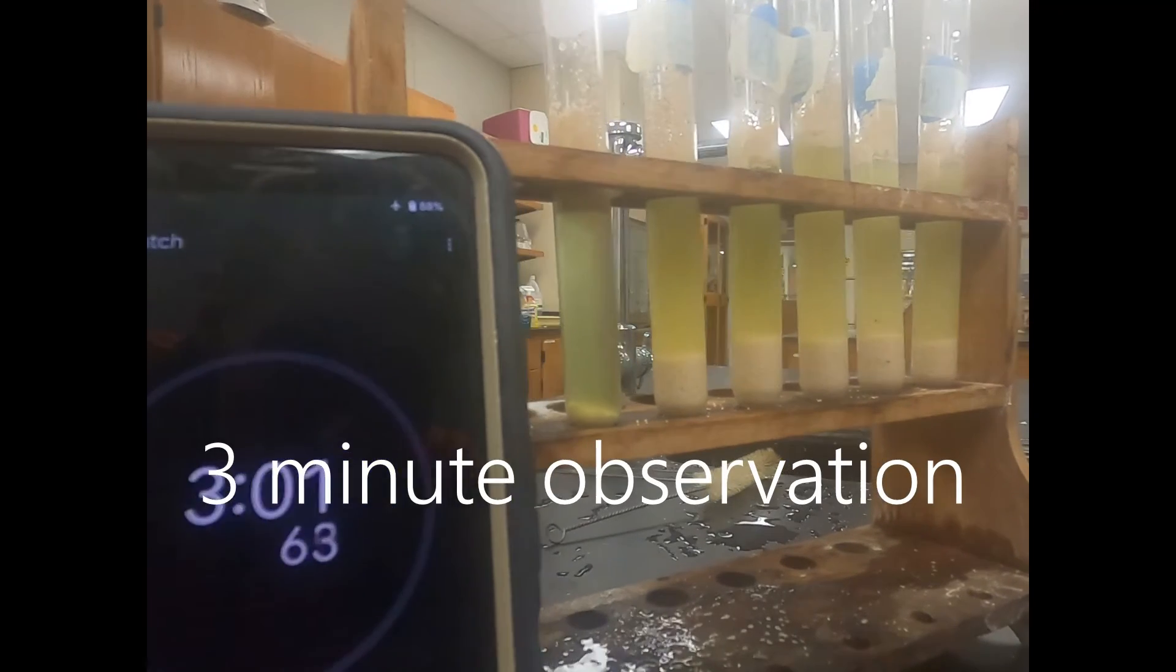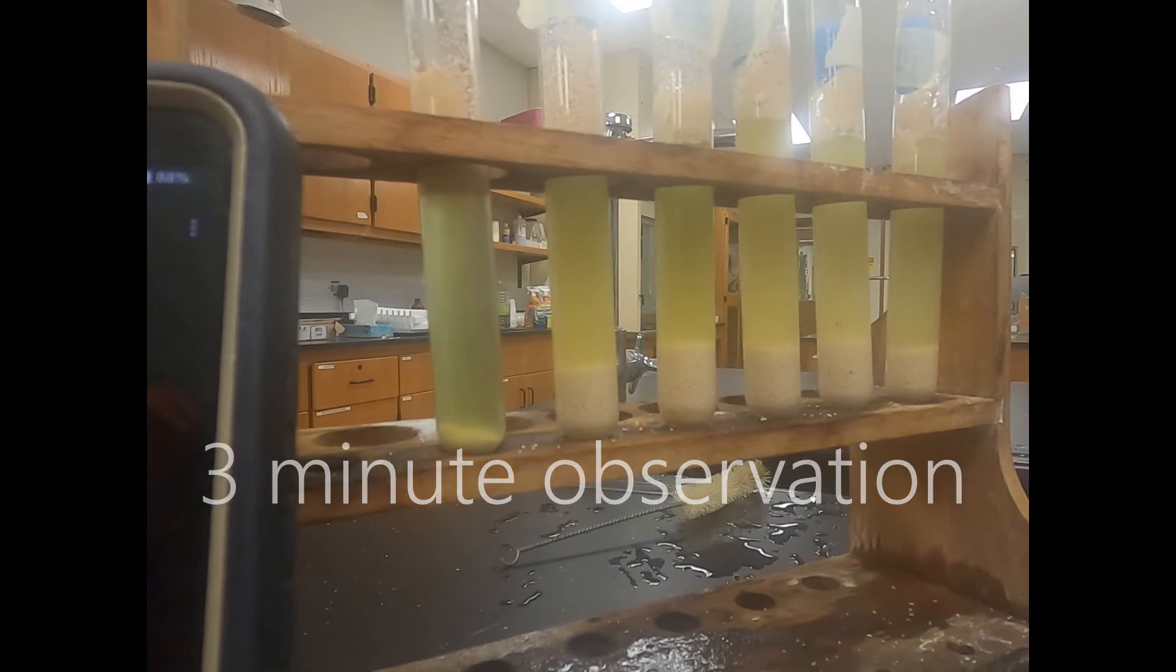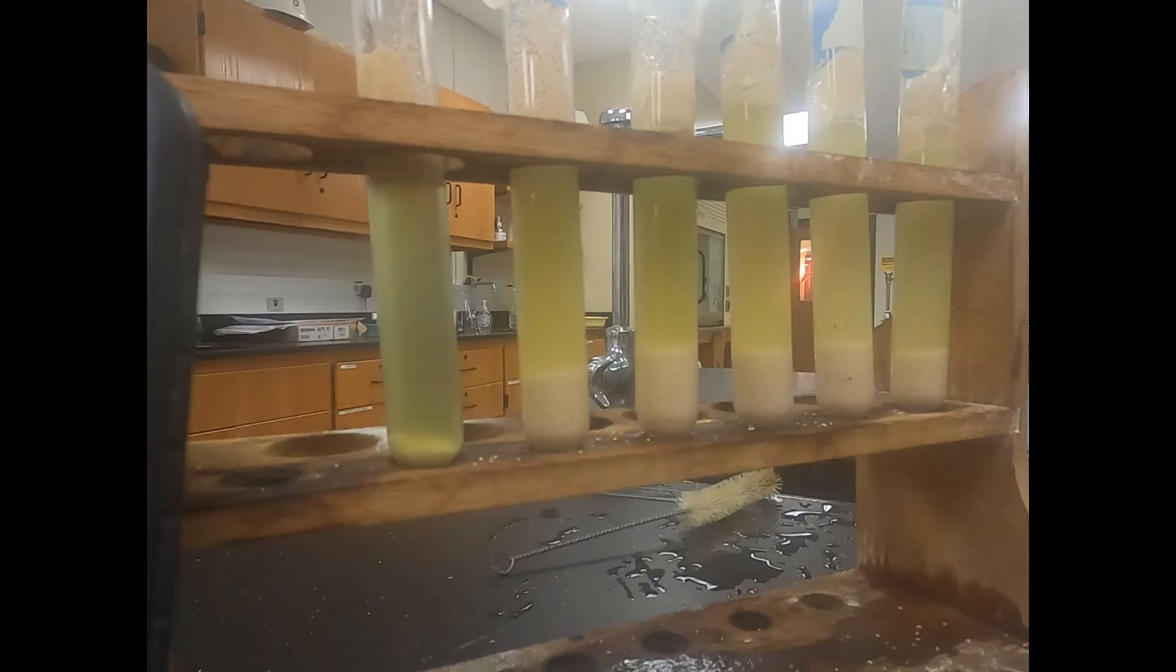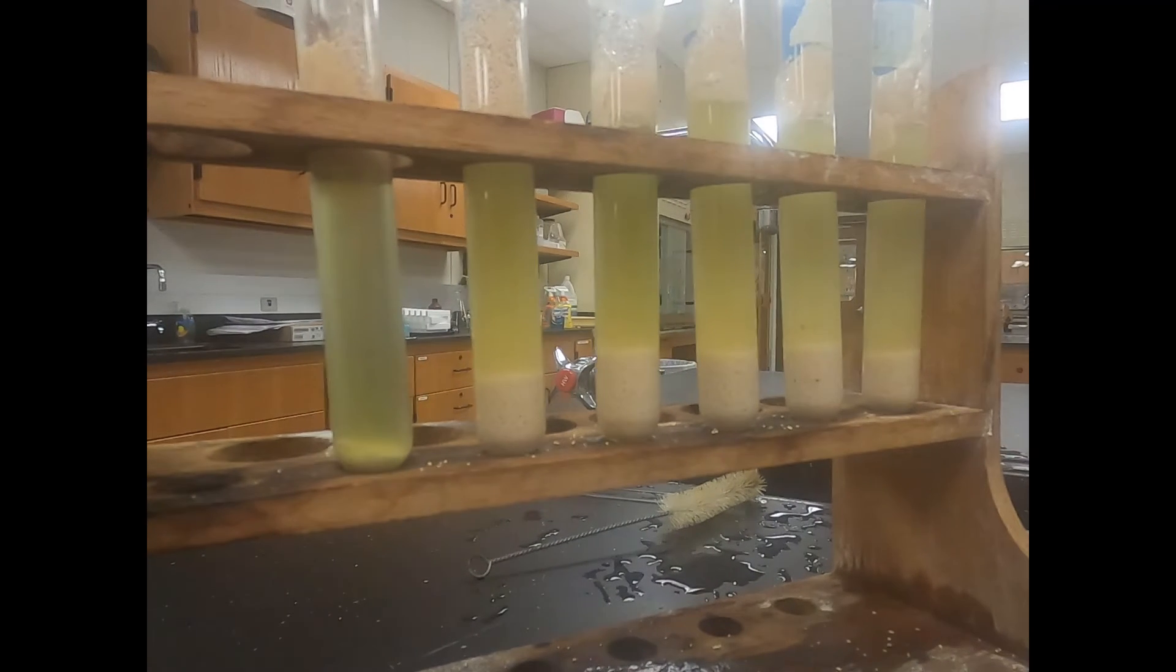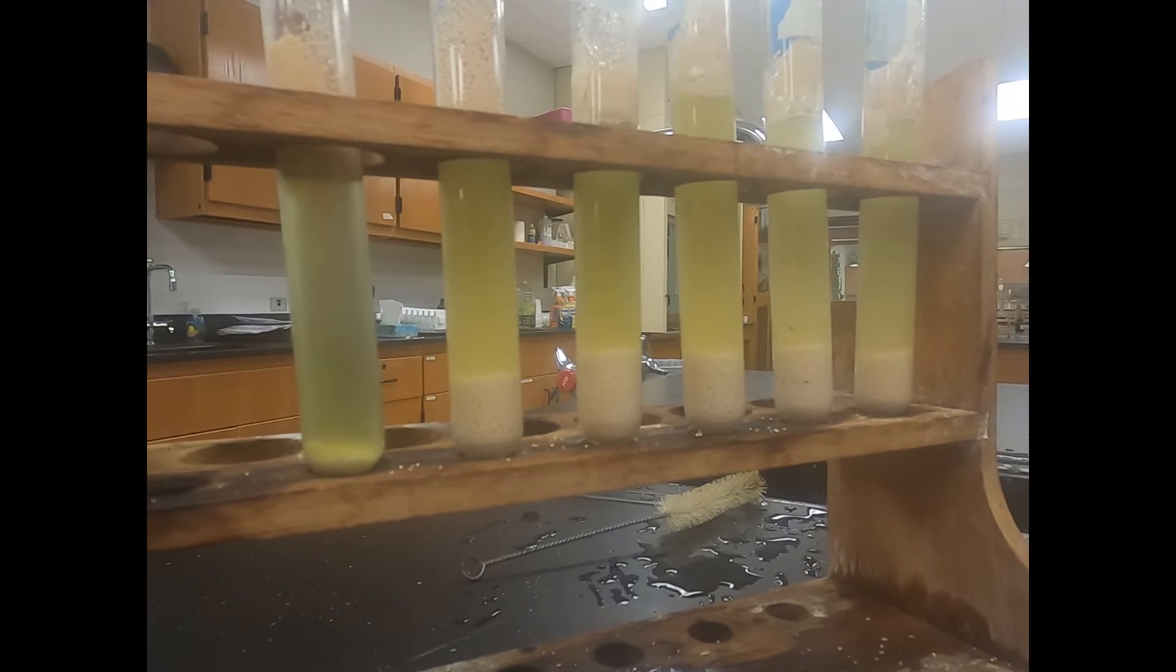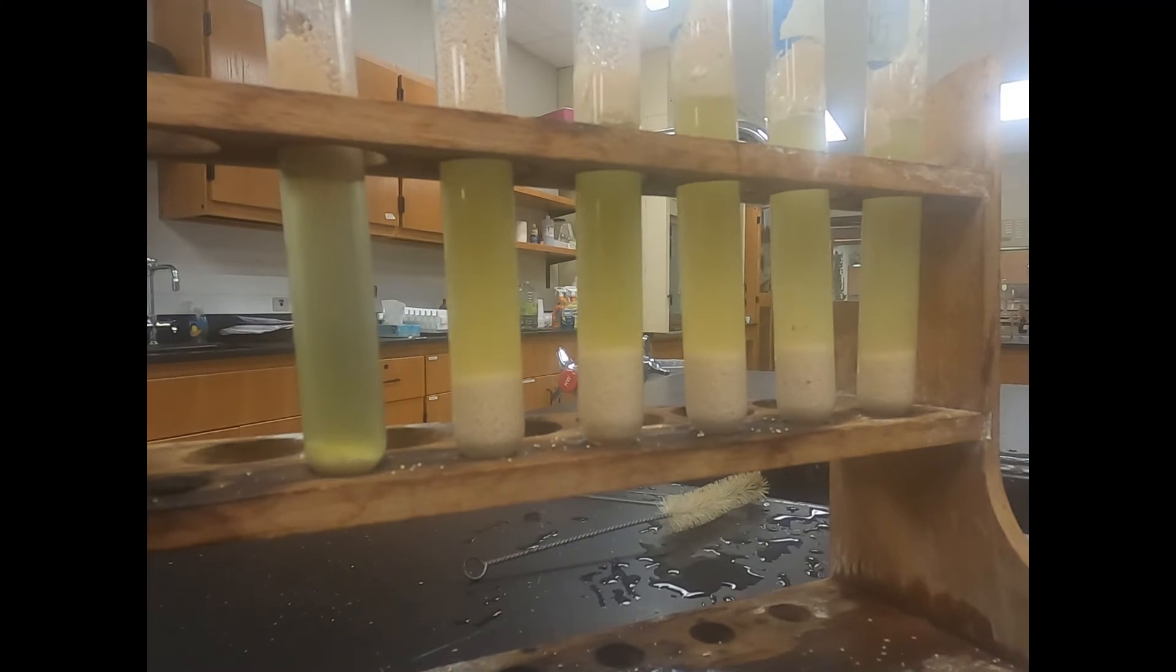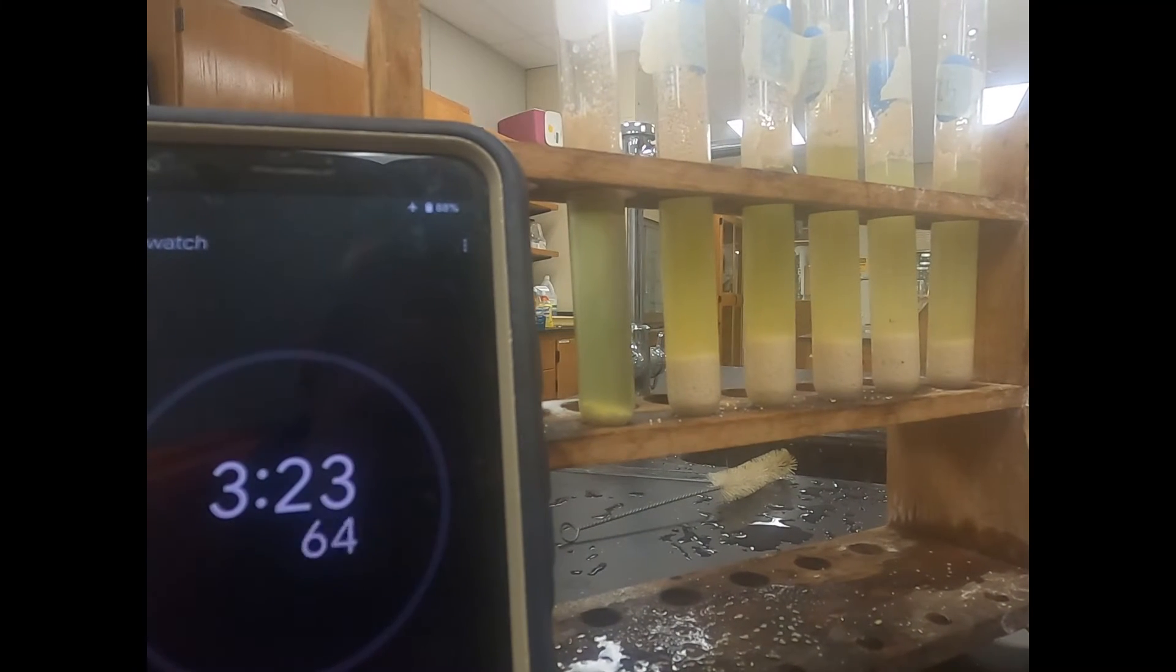So it's been three minutes so we want to look at that coloration. Specifically we're looking at changes in color and how that change may be different between different levels within these test tubes. Again record your color. Make sure you're being specific so we can have a good comparison of each one of the test tubes. We'll let it go for three more minutes and catch it at six minutes.